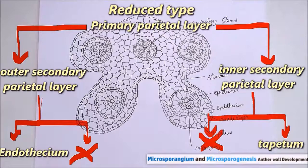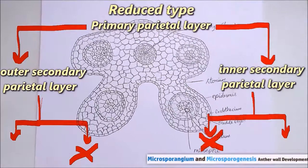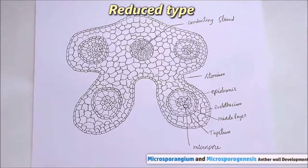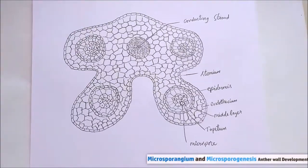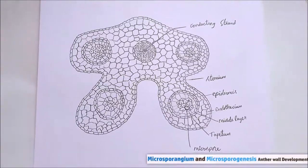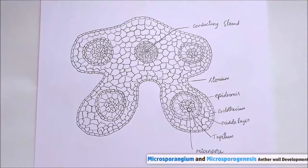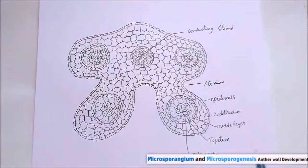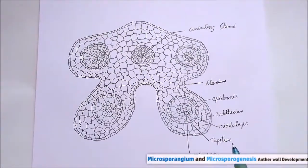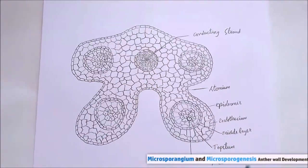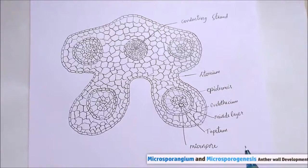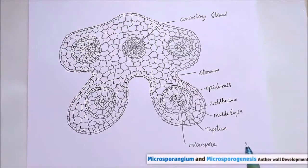In the monocotyledonous type, the primary parietal layer is divided into outer and inner secondary parietal layers. The middle layer is absent in the outer secondary parietal layer but present in the inner secondary parietal layer. In the reducer type, the middle layer is completely absent — only the endothecium and tapetum are present in the outer and inner secondary layers respectively, with no middle layer in between.